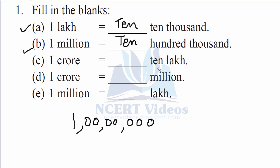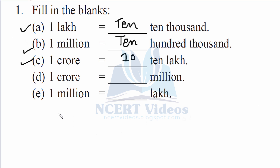We are writing 1 crore, which has seven zeros. Now we have to express it in terms of 10 lakhs. That makes it 10 lakhs, and further you are left with a factor of 10. Therefore 1 crore equals 10 × 10 lakhs.